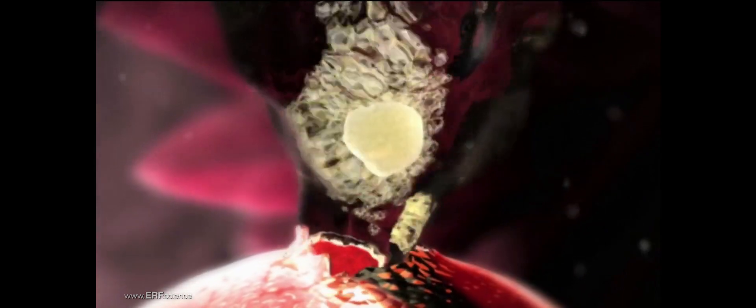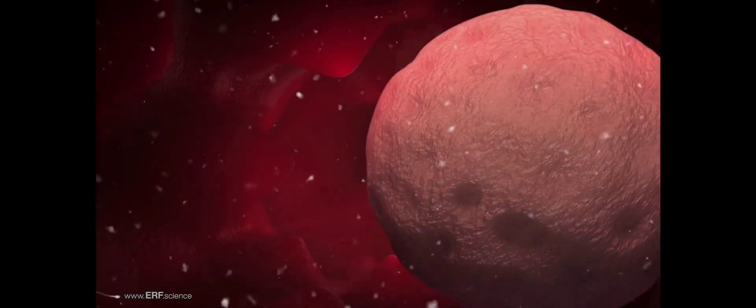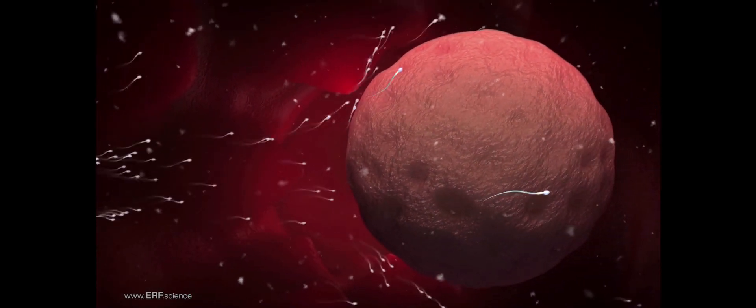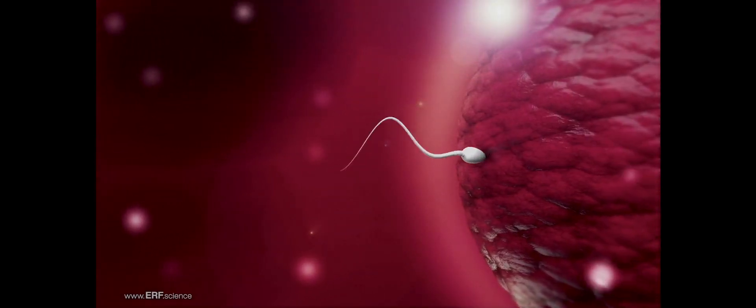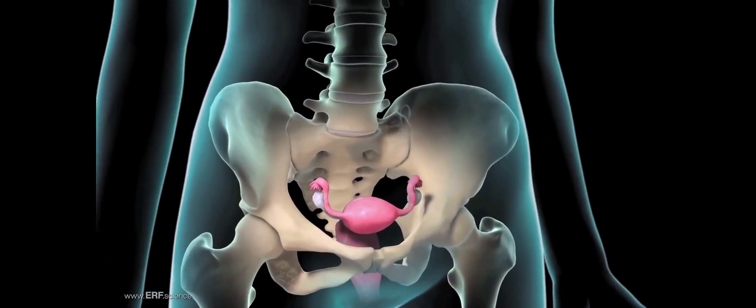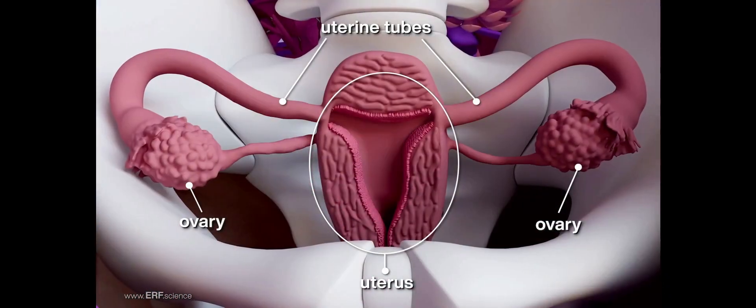Following the release of an oocyte from a woman's ovary in a process called ovulation, the oocyte and spermatozoan join within one of the uterine tubes, which are often referred to as fallopian tubes. The uterine tubes link a woman's ovaries to her uterus or womb.